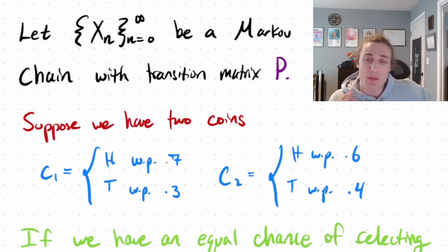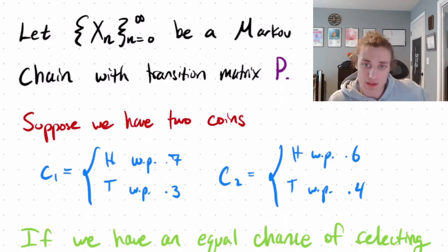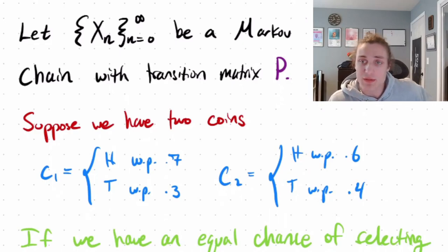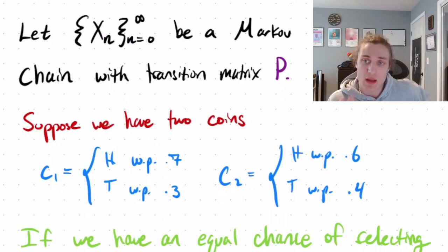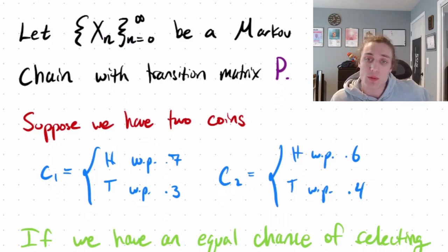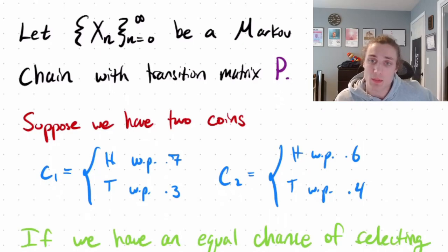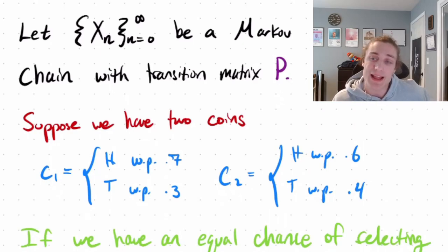We have this Markov chain with transition matrix P. We're going to define what this Markov chain is in the context of an example, and we're going to motivate why we even want to consider the Chapman-Kolmogorov equations to help us define an n-step transition.